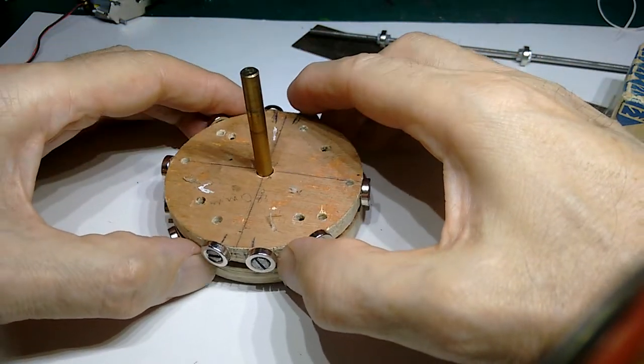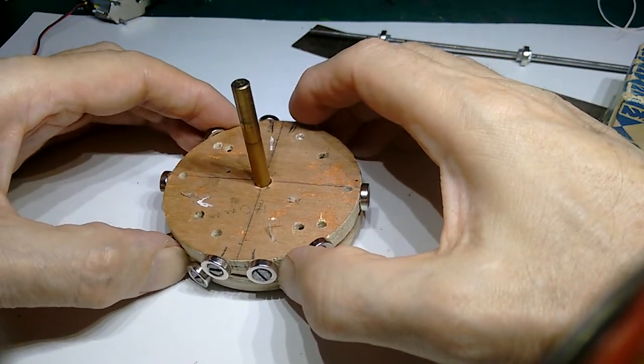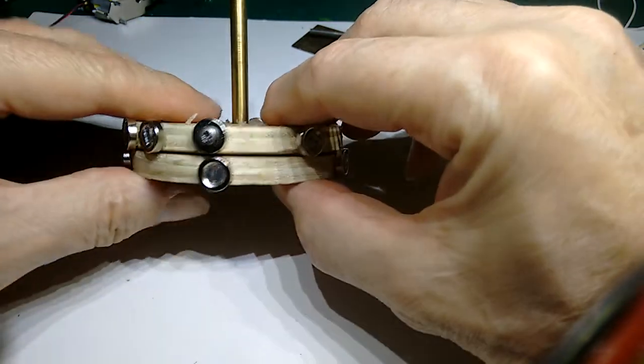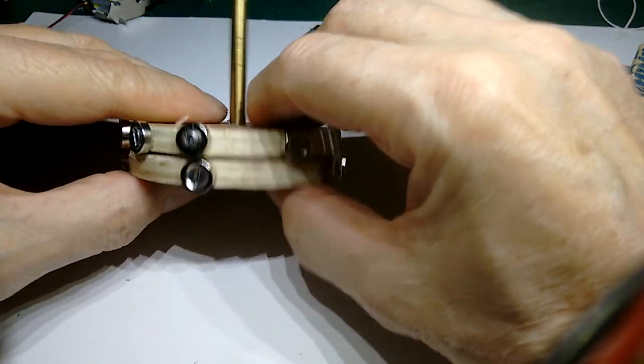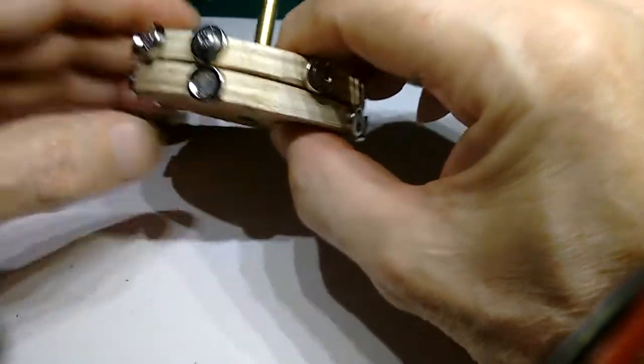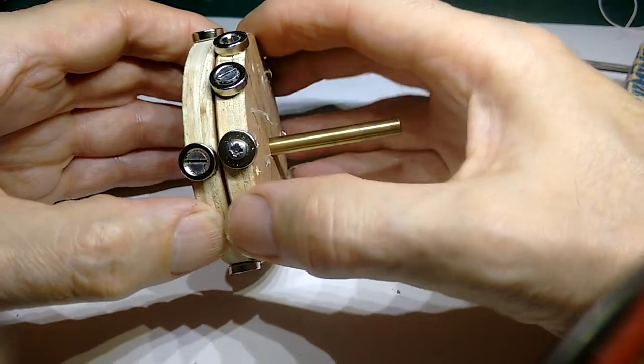But if I turn it round then the two come together because these two magnets are opposite poles. So that holds the device together.